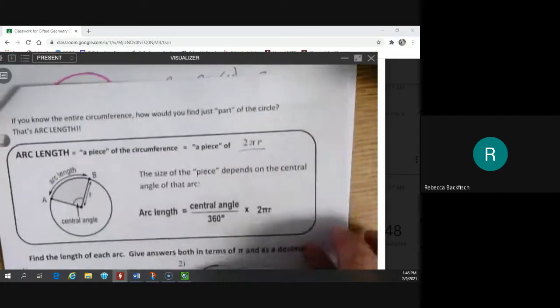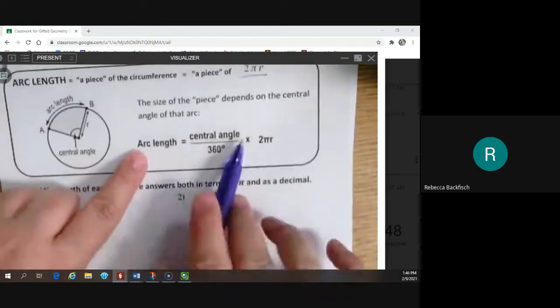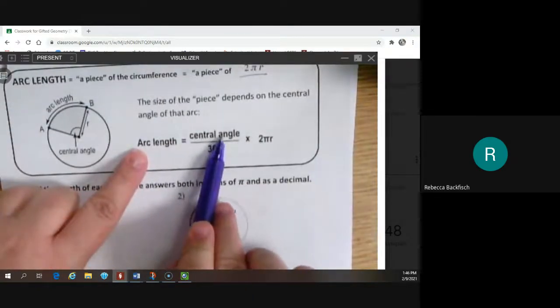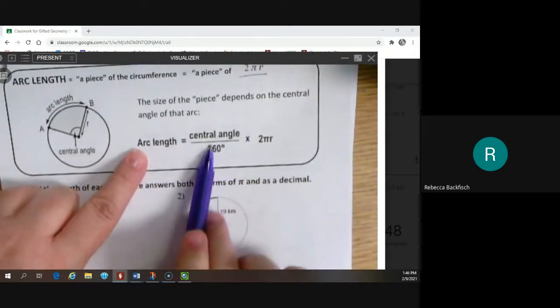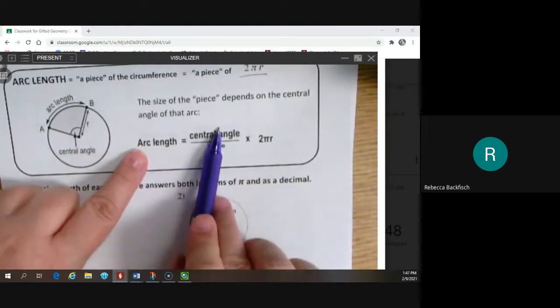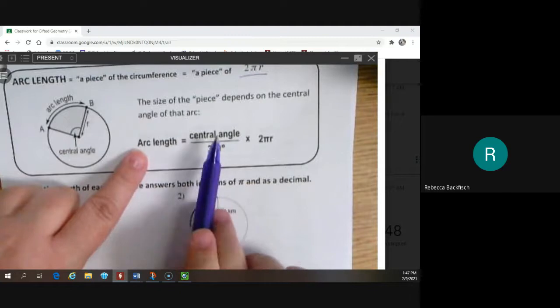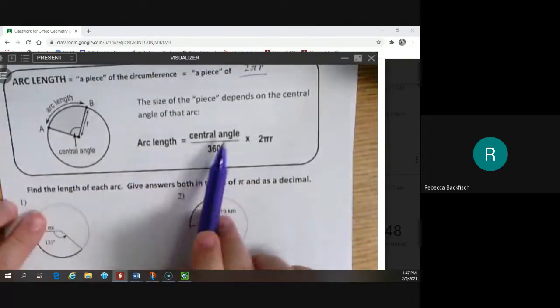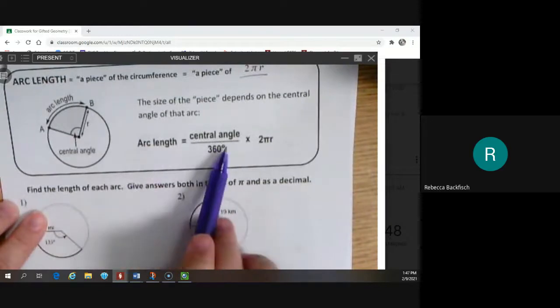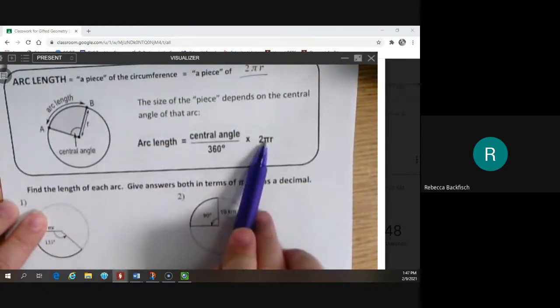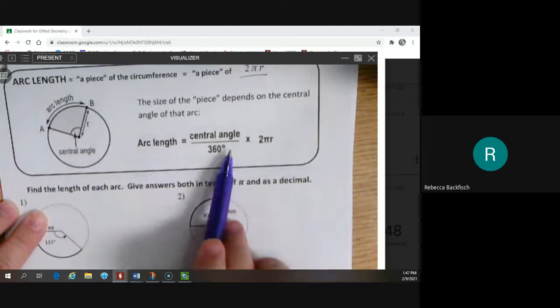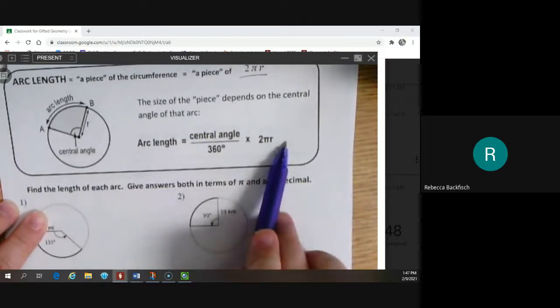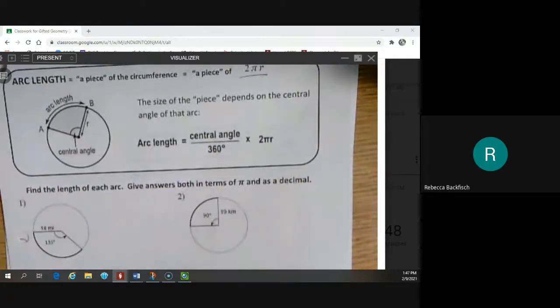So that's what's happening in this formula here. We're putting our angle over 360 saying this is the fraction of the circle that I have. However many degrees out of 360. If it's 180 out of 360, that's half the circle. If it's 90 out of 360, that's a quarter of the circle. So this is my formula. The arc length is whatever piece of the circle I have times two pi r. It's a piece of the circumference. It's the same size piece as degrees out of 360.